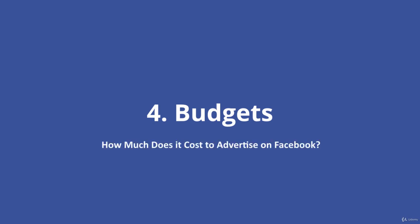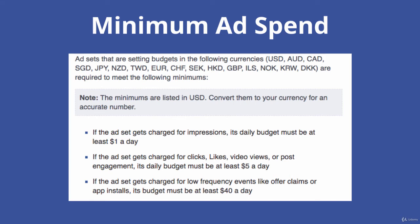Moving on to the fourth key to success with Facebook ads: budgets. The key question is, how much does it cost to advertise on Facebook? There are really two ways to look at this. First, the absolute minimum — this is a screenshot from Facebook for Business showing minimum ad spend. For USD, Australian dollar, Canadian dollar, Euro, and many other currencies: if you just want impressions, the minimum is $1 per day. For clicks, Facebook page likes, video views, or post engagement, the minimum budget is $5 per day. For low-frequency events like app installs, the minimum is at least $40 per day.